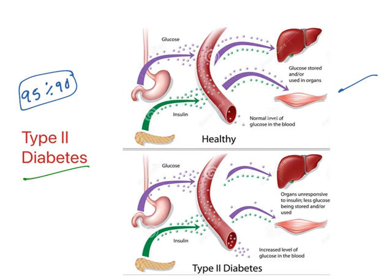In Type 2 diabetes, either insulin amount is reduced or cells become insulin resistant — meaning even though insulin is released, cells are unable to take up glucose in the presence of insulin. Organs are unresponsive to insulin. Less glucose is stored or used because glucose is not getting inside the cell. It stays in the blood, causing hyperglycemia. In Type 2 diabetes, glucose is there and insulin is also released, but the problem is cells become a little bit resistant — it is called insulin resistant.